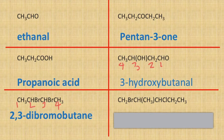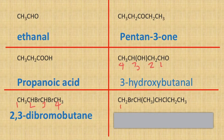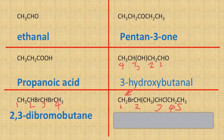Our final one has got all sorts going on. Let's first of all look at my longest carbon chain — carbon number one, two, three, four, five — so it's going to be pentane. Coming off carbon number one I've got a bromo group, and off carbon two I've got a methyl group.